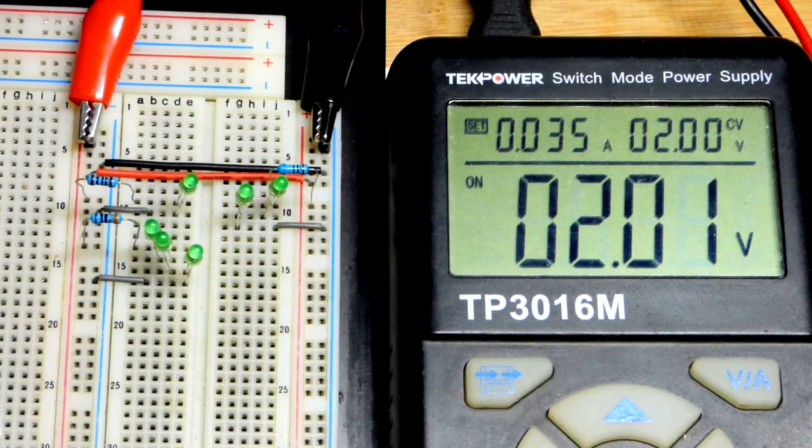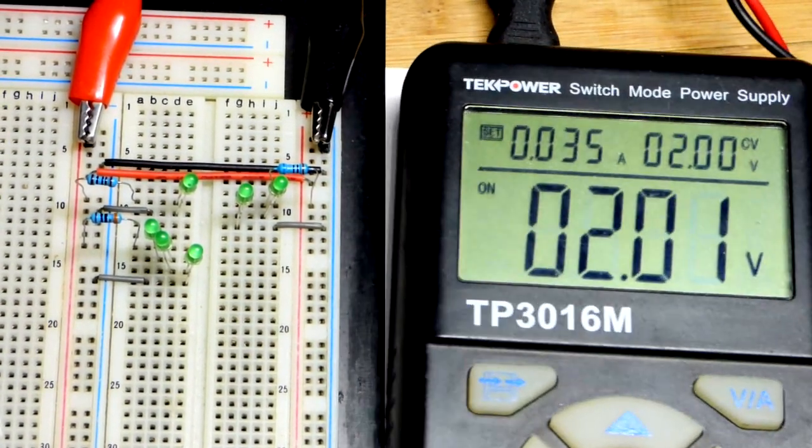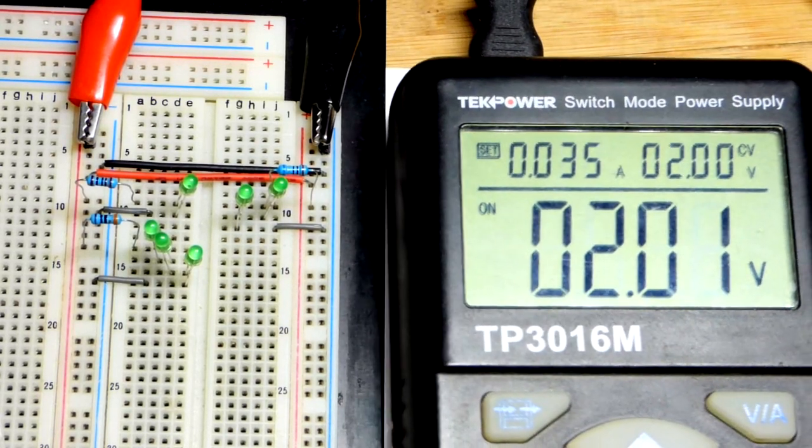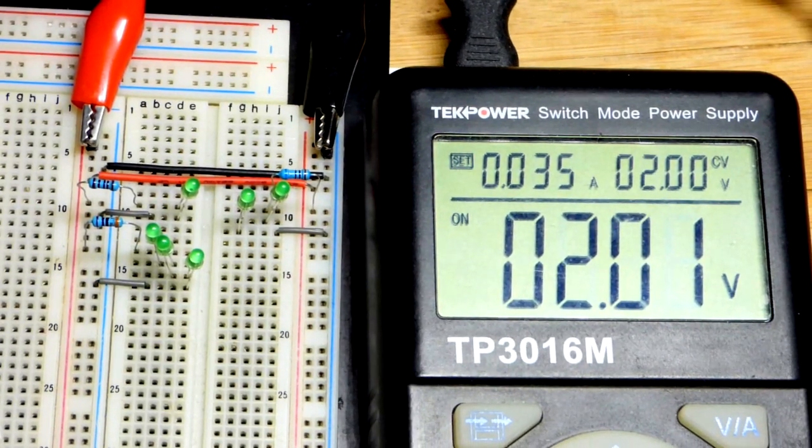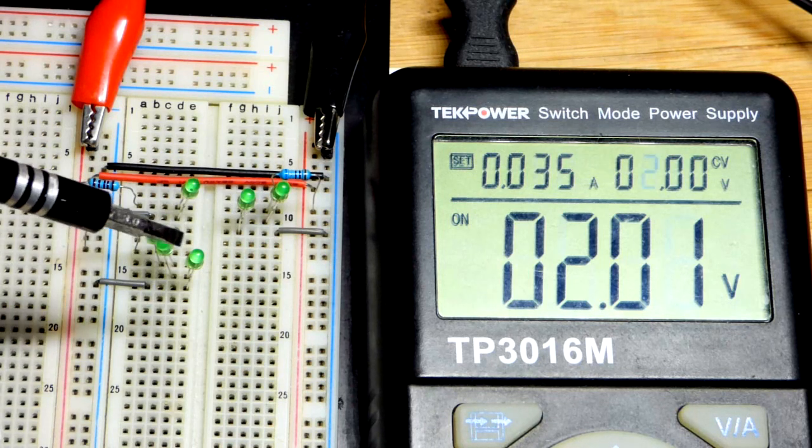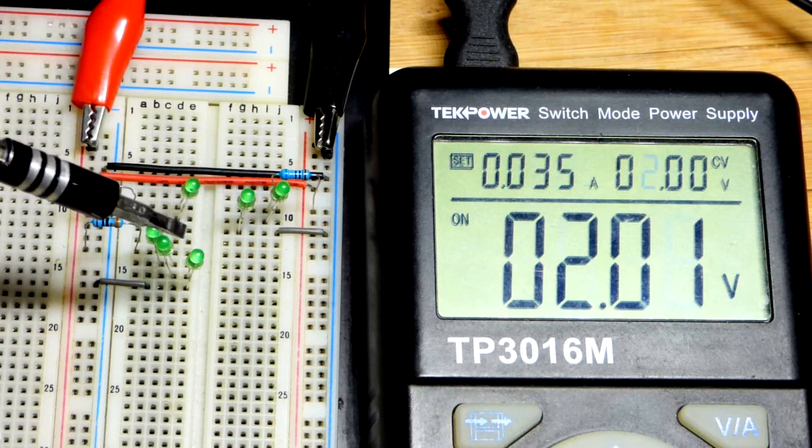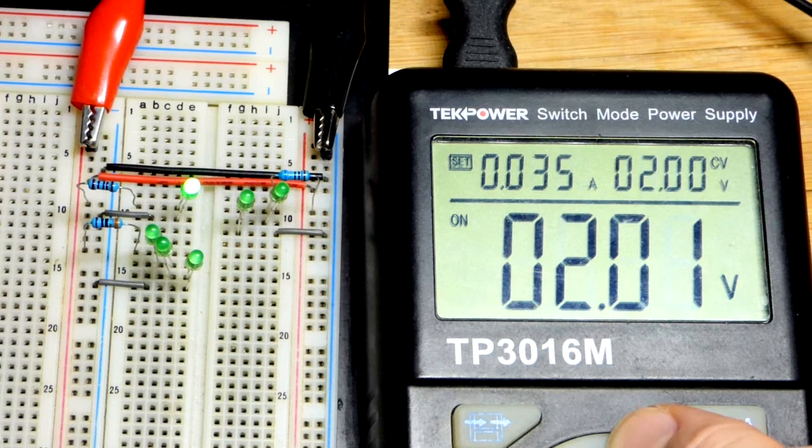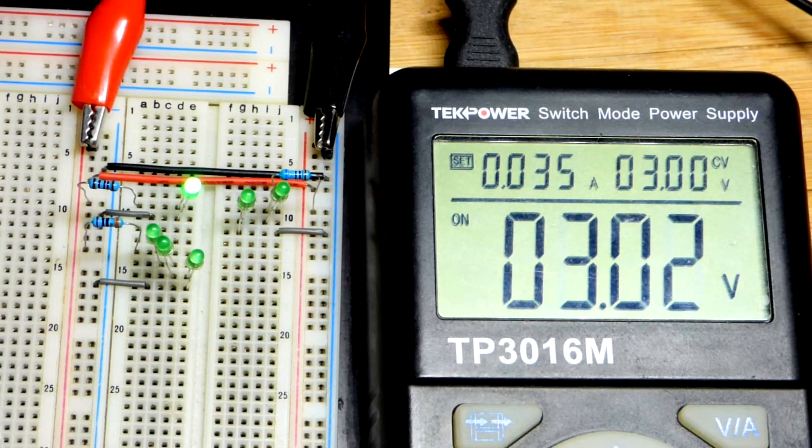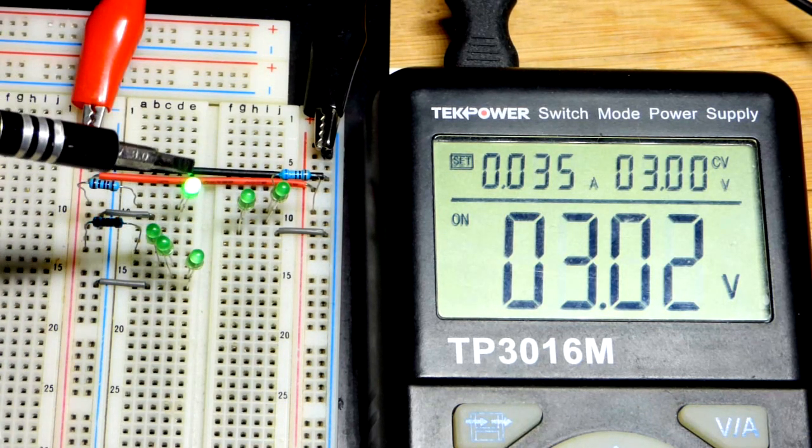These are green LEDs, and by the way, these are new LEDs. I just took them out of the container. This is the first time I'm using them for this video. That's because as you use LEDs and abuse them, they don't get as bright. So these should all have the same brightness once they have the same amount of current going through them.